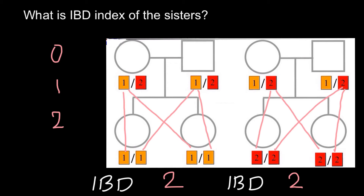Why do we need IBD indexes? We need this system in order to convert verbal information into the language of machines and computers. When we apply these indexes to the same locus of different people, machines can compare people across thousands of loci, and we can get valuable information about the inheritance of diseases, whether randomly compared people share similar phenotypes, or whether people are related or not.